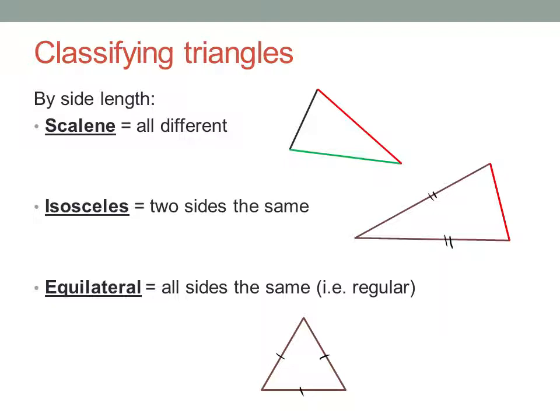Triangles are usually classified by their side length and their angles. If all three sides are different lengths, the triangle is called scalene.